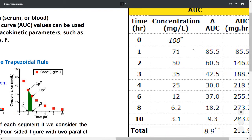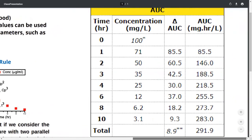All of the points have been plotted from the same graph to denote the concentrations: 71 at 1 hour, 50 at time 2 hour, similarly 35 at 3 hour, 25, 12, 6.2, 3.1. Looking at this particular chart, you can find that this follows first order kinetics.